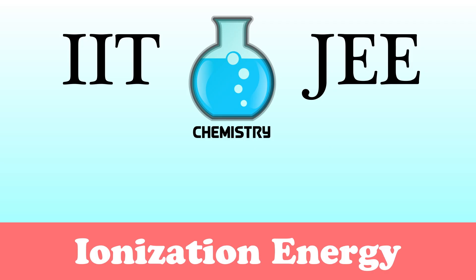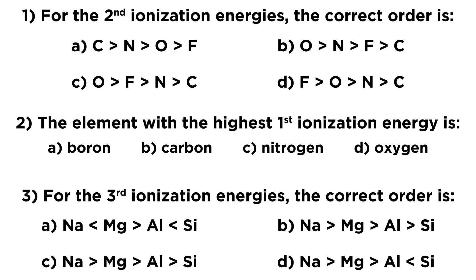Let's try a few questions associated with ionization energy. For the first question, it asks for the correct order of second ionization energies for carbon, nitrogen, oxygen, and fluorine from larger to smaller. The second question asks which element has the highest first ionization energy, with four options. The third question asks for the correct order of third ionization energies for sodium, magnesium, aluminum, and silicon. Notice that the same elements appear in different orders — the greater than or less than symbols do change. If you're not sure how to approach this, check out my tutorial on periodic trends and then give this a try.